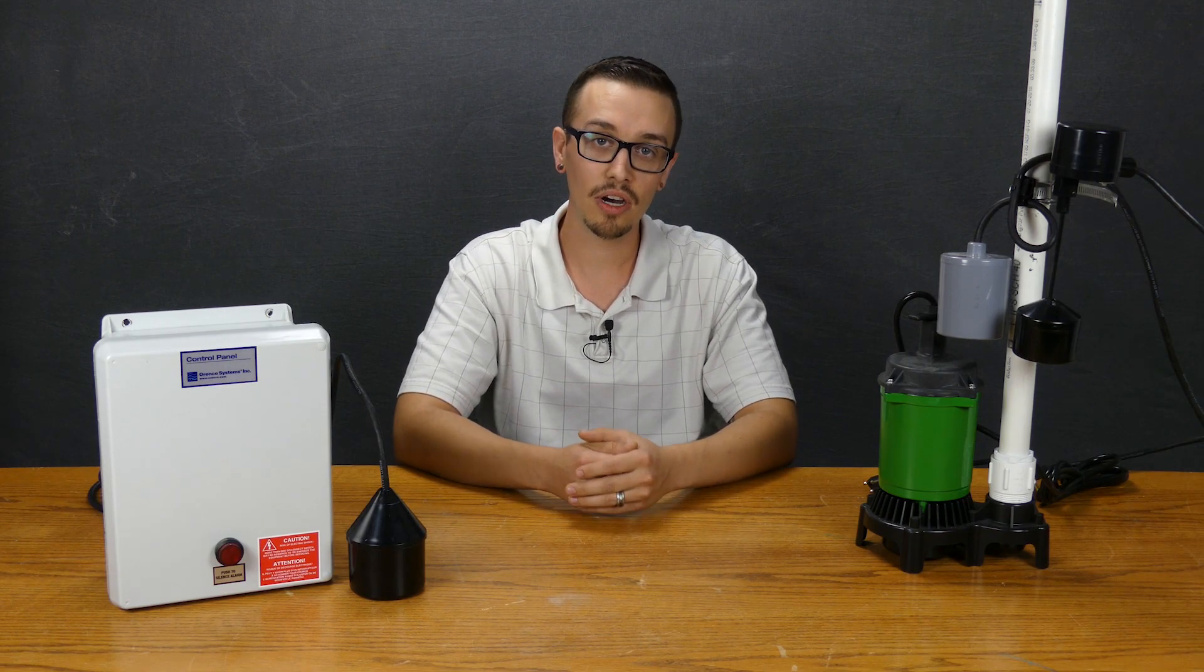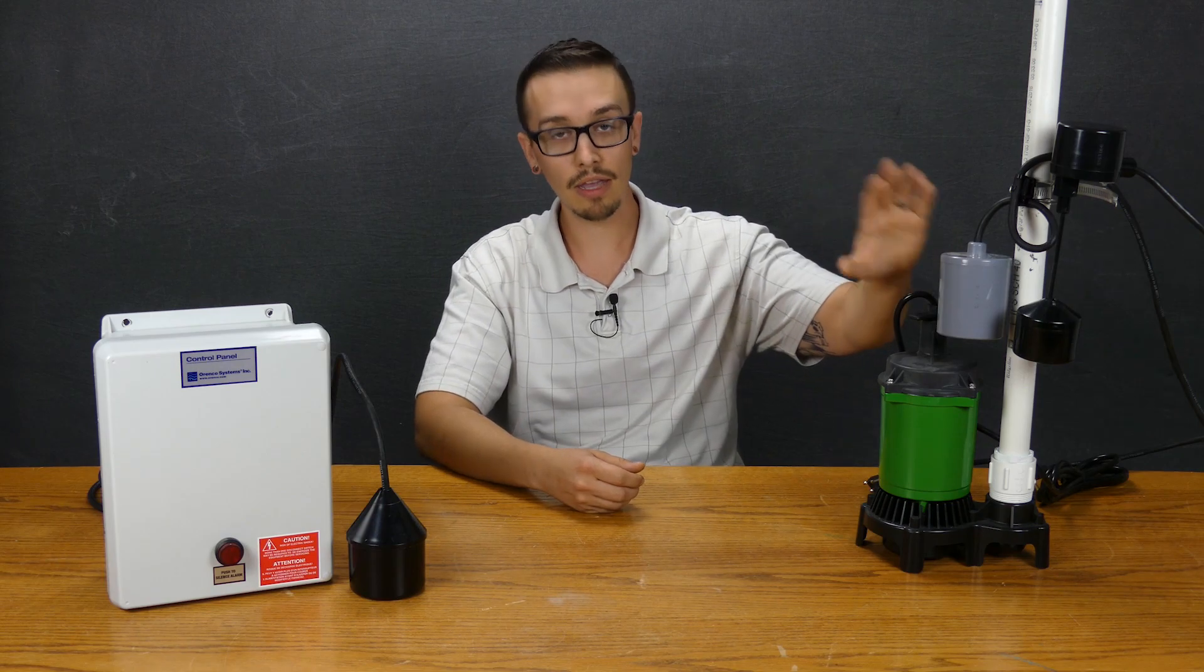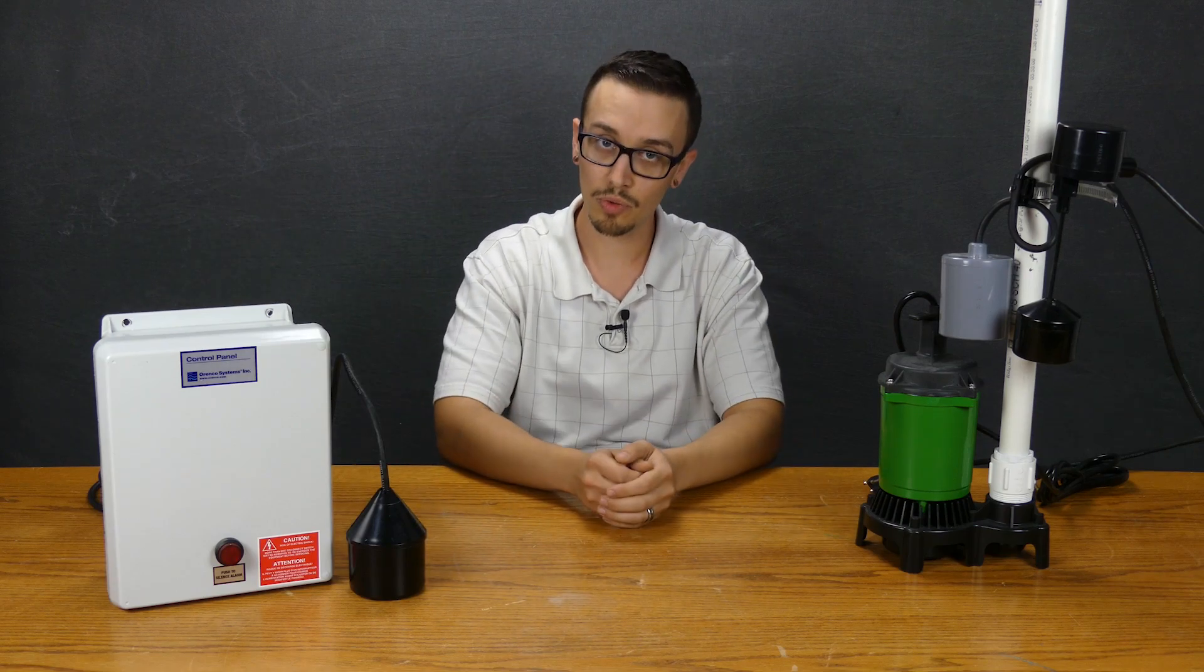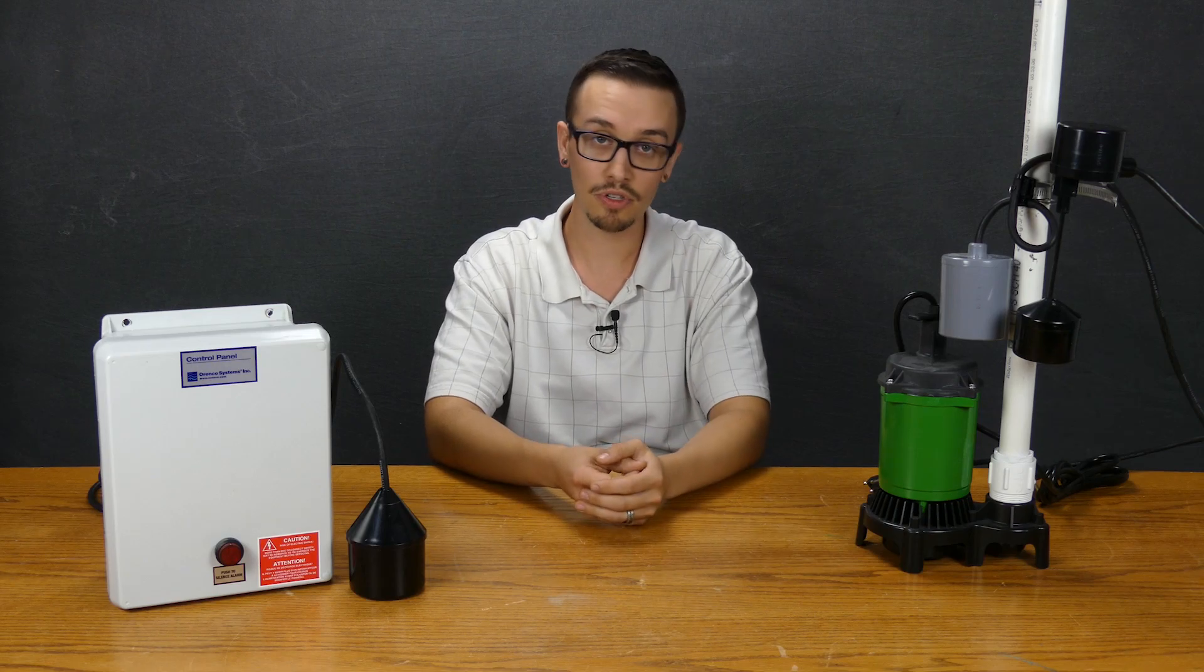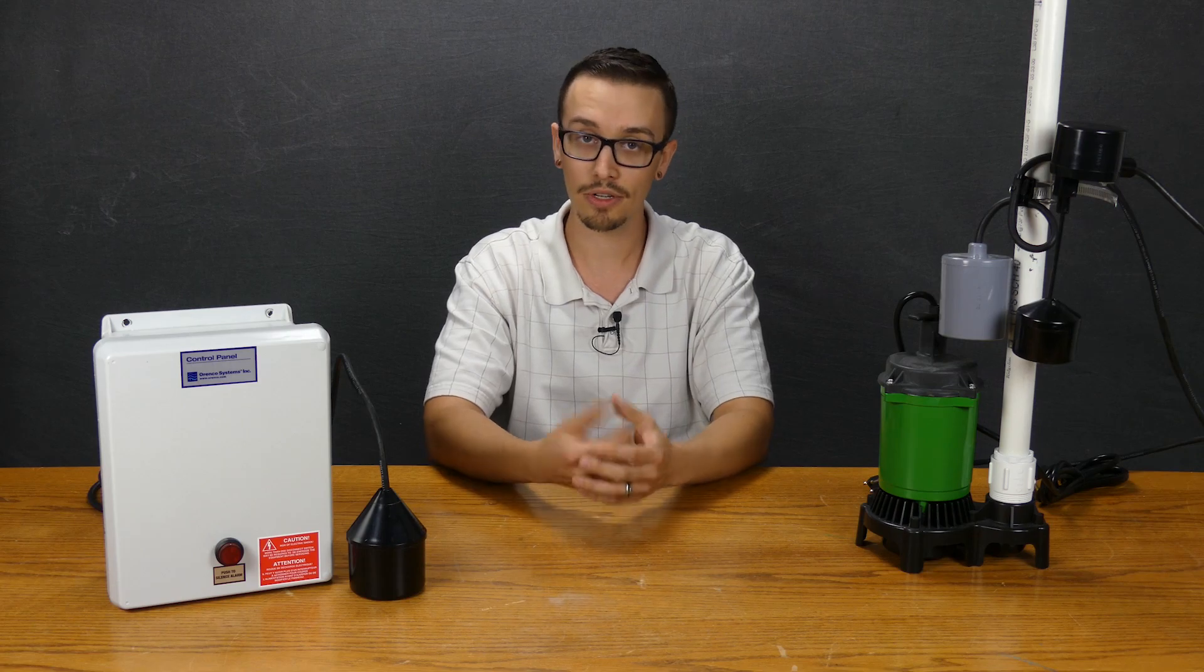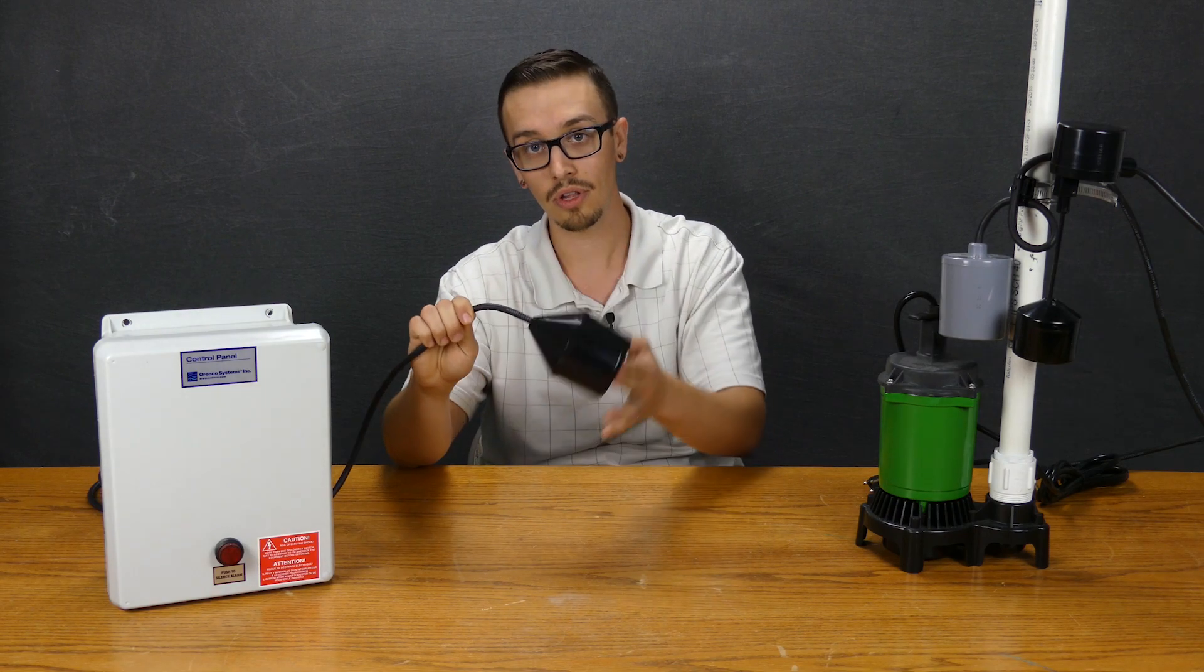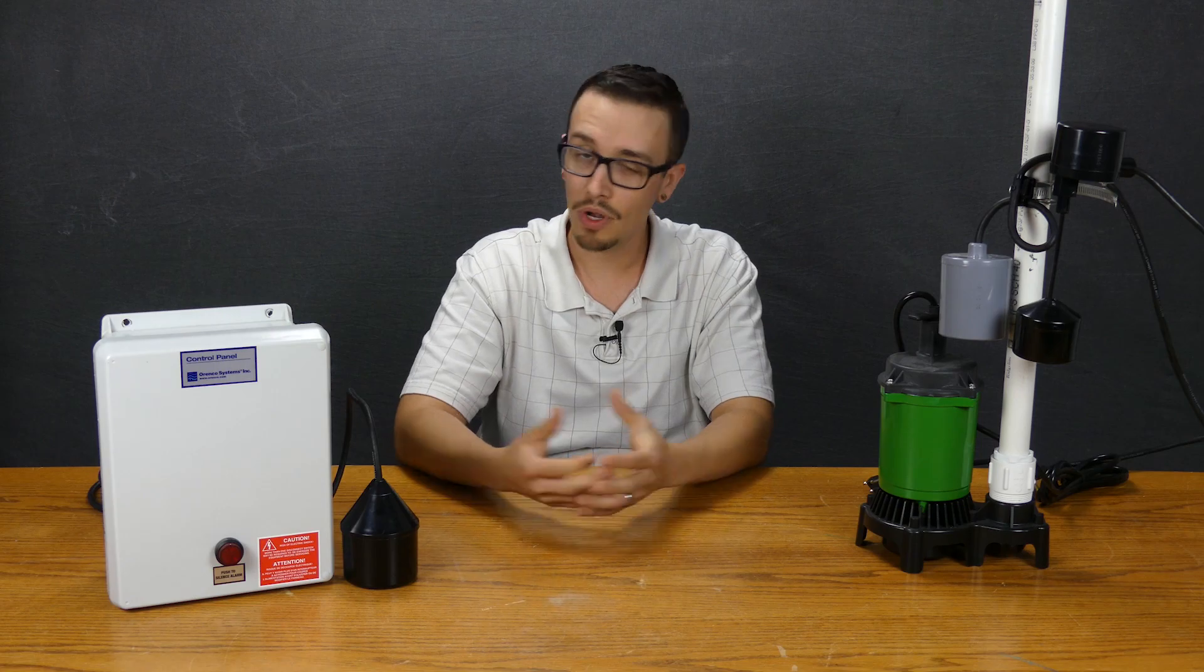On the topic of tether length and float travel and so forth, with a pump control switch the longer this tether, the more travel that float switch is going to have. So that of course makes pump control switches a little more susceptible to getting hung up with other floats or objects in the tank, whereas a control switch typically only has a very short tether, maybe an inch and a half to three inches. So there's a lot less movement and a lot less chance of something going wrong.